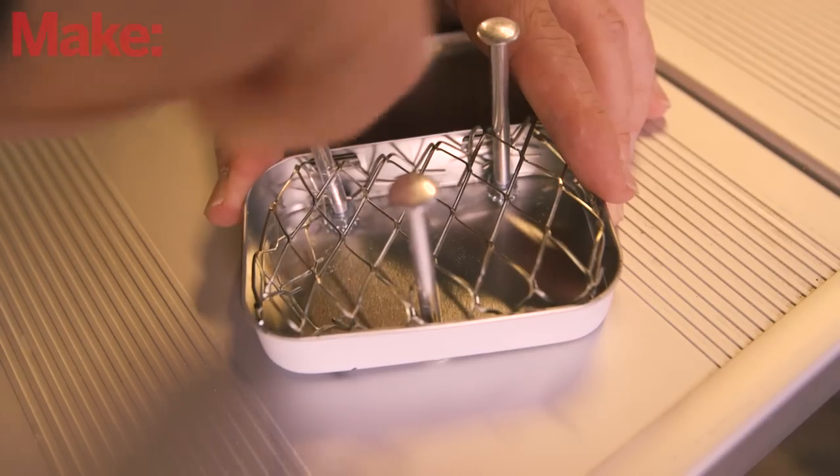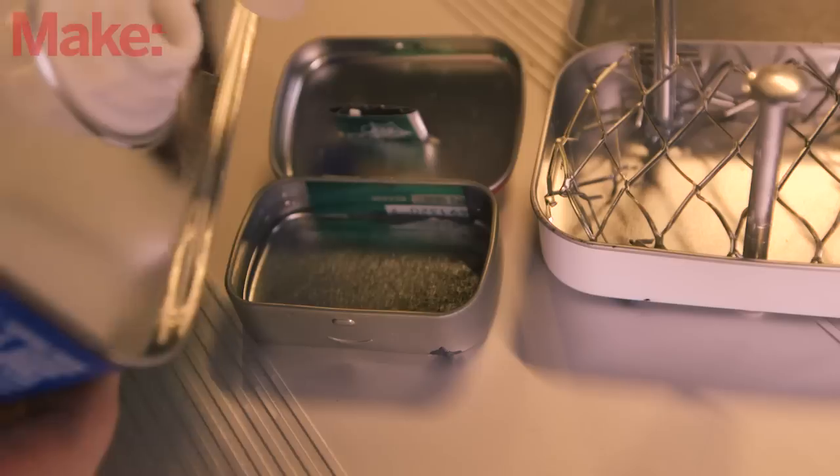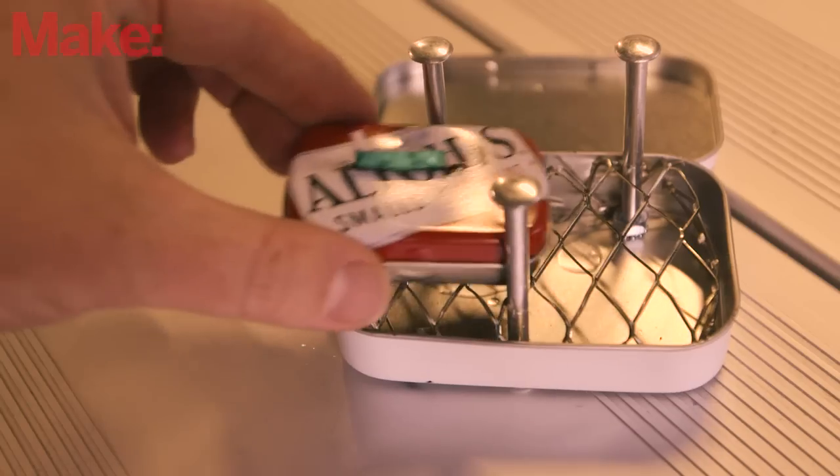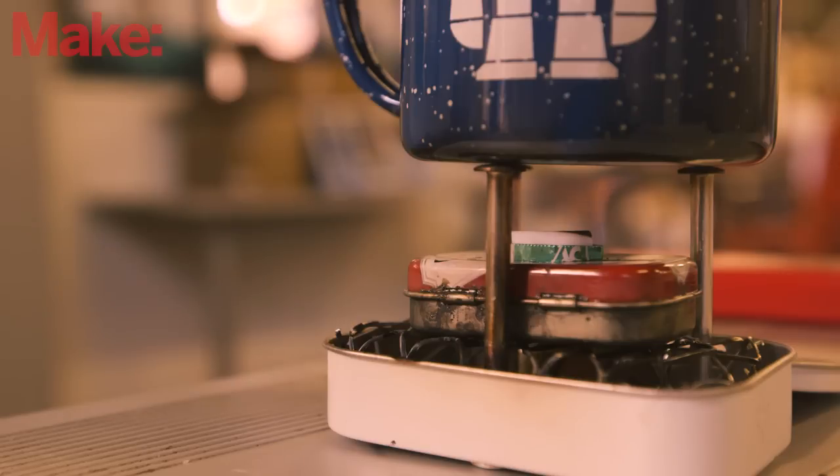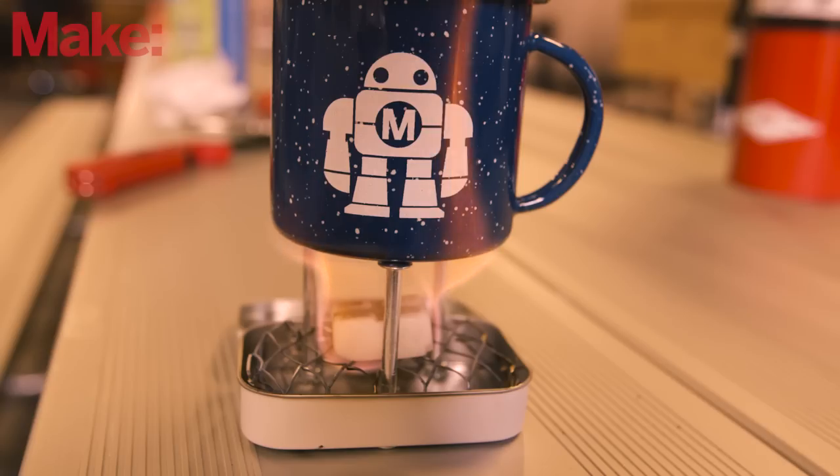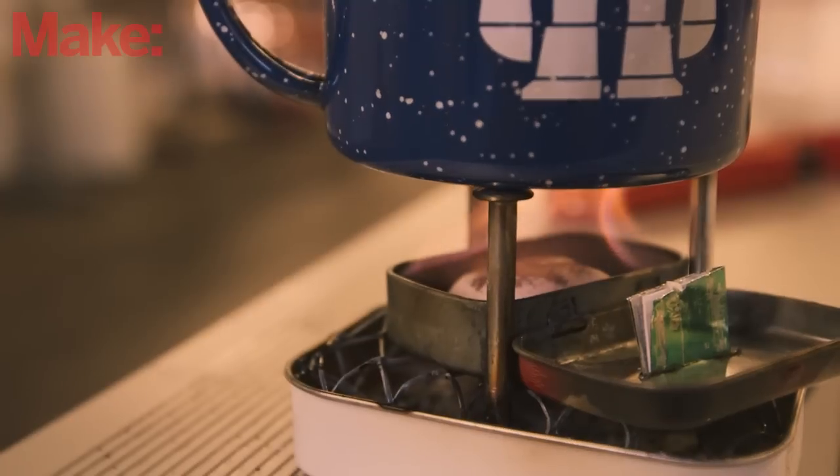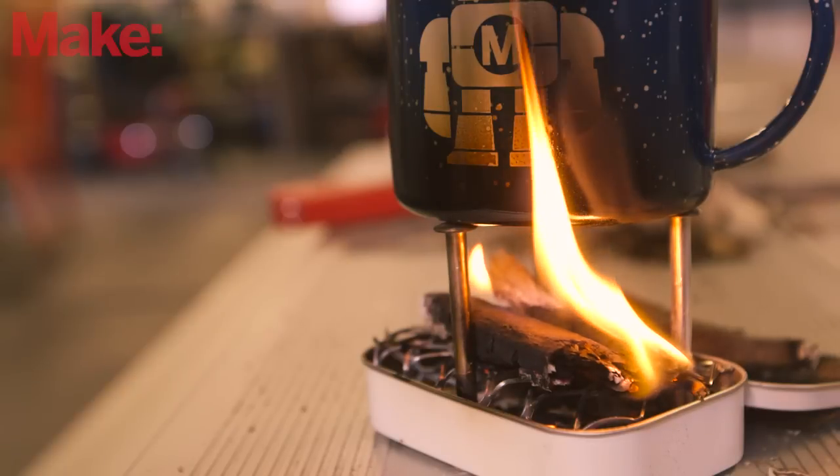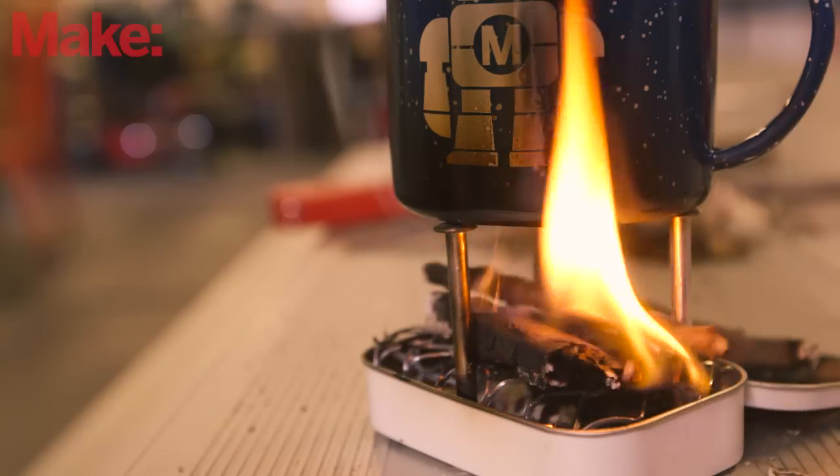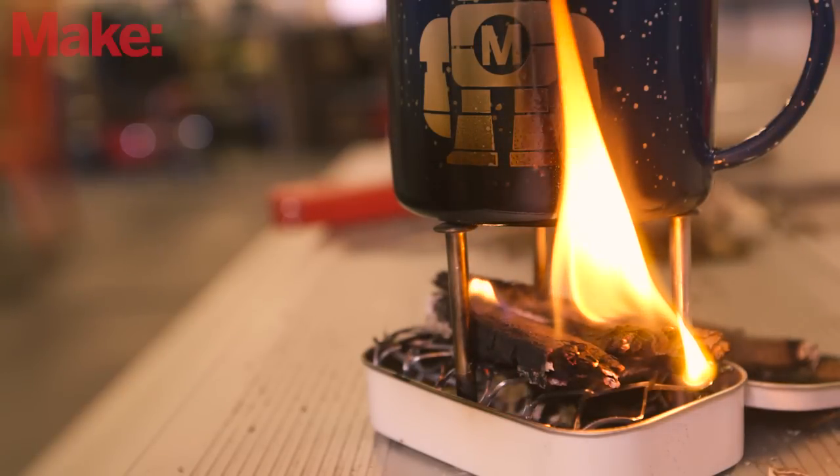This tiny stove is designed for use with a number of different fuels. To use denatured alcohol, fill the small tin with the alcohol, close the lid, and then ignite the wick. For solid fuel, you will need to experiment to see if it works best directly on the mesh or in the small tin with the lid open. To burn wood chips or twigs, place these onto the mesh layer and replenish the fuel as it is consumed. Happy camping!